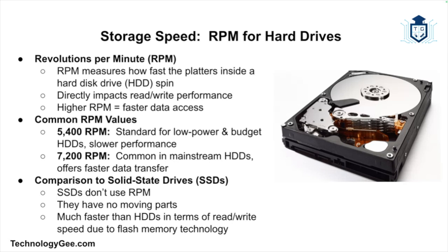For traditional hard disk drives, an important unit of measure is RPM, which stands for revolutions per minute. This unit measures how fast the platters inside a hard drive spin. Common RPM values for hard disk drives are 5400 RPM and 7200 RPM, with higher speeds offering faster read/write performance. Note that solid state drives do not have RPMs because they have no moving parts, and they are much faster than traditional hard disk drives. Understanding RPM is important when comparing hard drive performance, as it can significantly impact data read and write speeds.